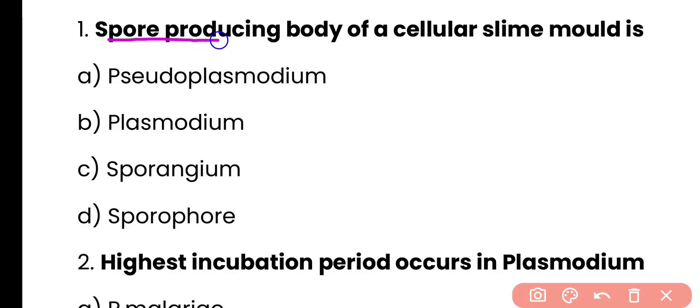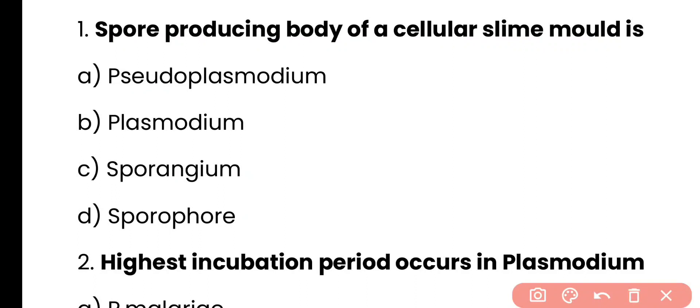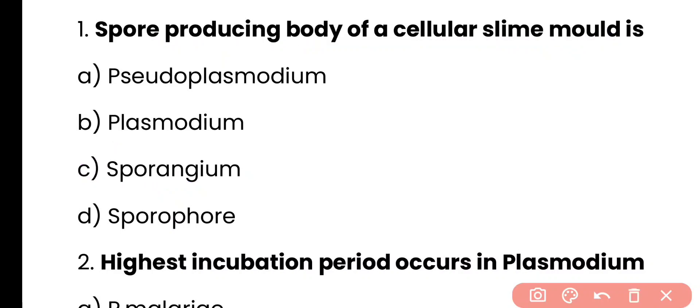Question number 1. Spore-producing body of cellular slime mold is: pseudoplasmodium, plasmodium, sporangium, or sporophore? Correct answer is option C. Sporangium is the spore-producing body of cellular slime mold.